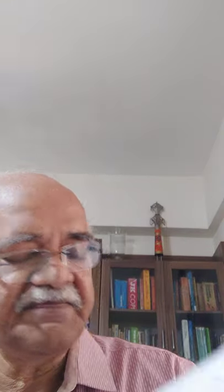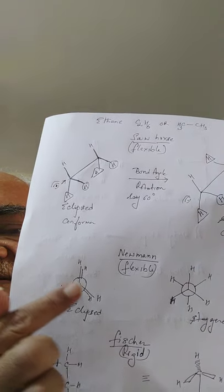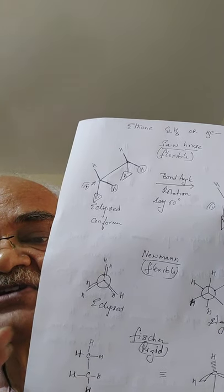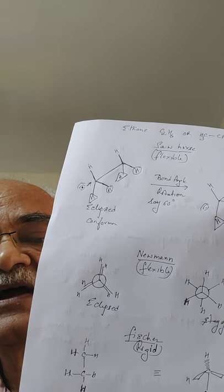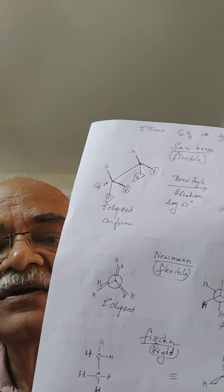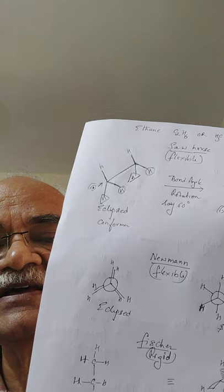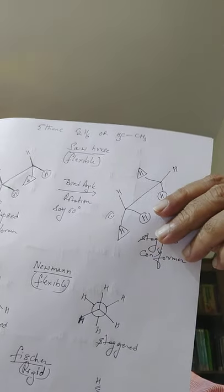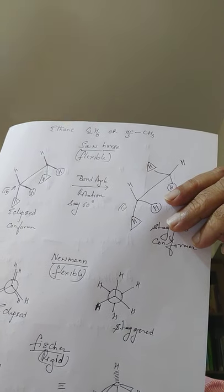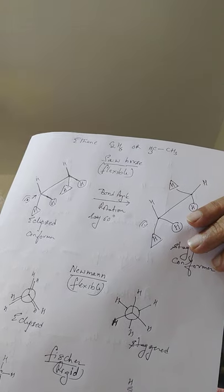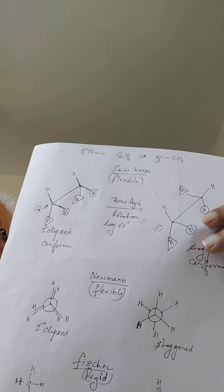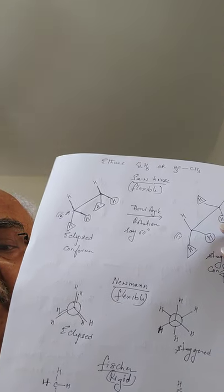That head-on representation is called the Newman projection. In the Newman projection, there is a circle indicating the carbon away from us, and inside the circle a Y-shaped figure indicating the carbon towards us, with its three hydrogens. The other three hydrogens (on the back carbon) are drawn from the periphery of the circle with slightly shorter lines. When these are one behind the other it is the eclipsed form; rotating gives the staggered form.